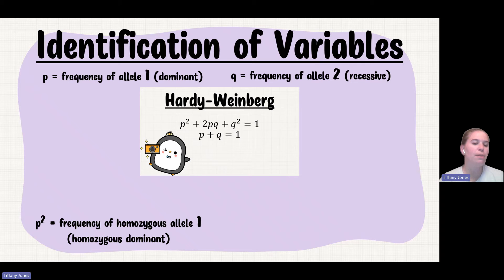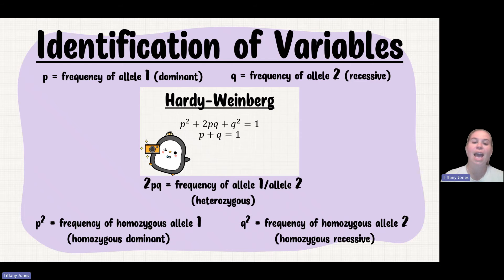So P² is my frequency of homozygous for allele one, or I always say frequency of the homozygous dominant. Q² is the frequency of the homozygous allele two, or a homozygous recessive. And then 2PQ is the frequency of the allele one and the allele two when they're heterozygous.